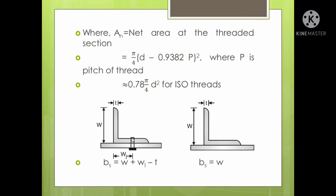There are two cases for ANC: if bolting is done, you consider the width as W_i into thickness; if there is no bolting, you consider W as the total width into thickness. This applies to equal angle sections.